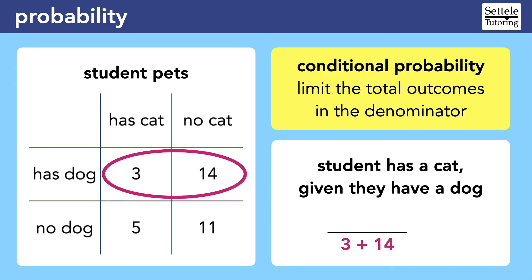We completely ignore the bottom row because the question is telling us to focus only on students who have a dog. Then we're looking for the students who have a cat within that initial group, so the only value we want is the 3 students who have both a cat and a dog. Again, we're ignoring the students who don't have a dog, even though 5 of them have a cat because they are not part of the initial group.